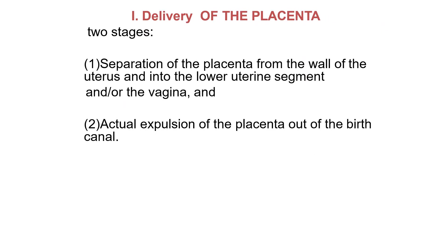Delivery of the placenta has two stages. The first is separation of the placenta from the wall of the uterus and its descent to the lower uterine segment. The second stage is expulsion of the placenta through the birth canal.